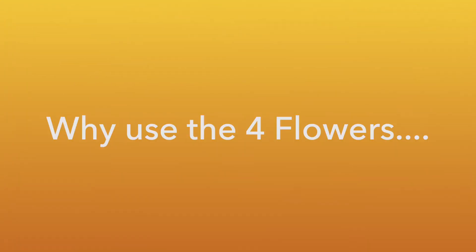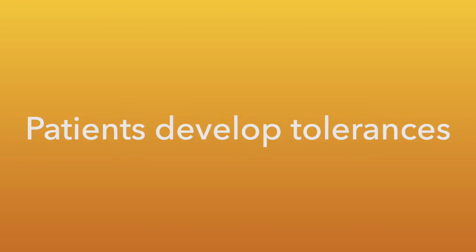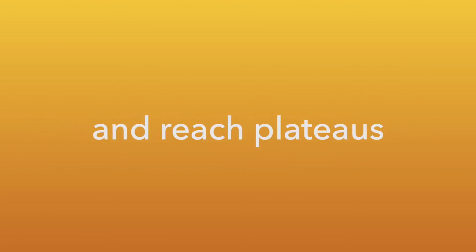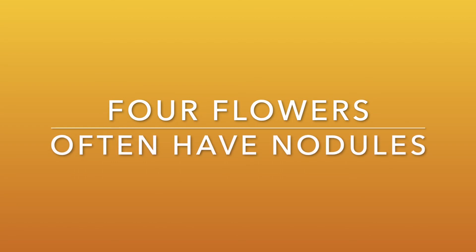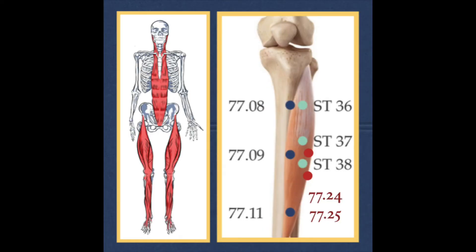The question we need to ask ourselves is: why use the four flowers instead of traditional stomach points? There are a couple of reasons. One, patients develop tolerances and they reach plateaus. Second, the four flowers often have nodules. If you palpate down the edge of the tibia and between the muscle, you'll find an empty space there, and it's very common to find areas of tightness, nodules, or trigger points in that region. That's one reason why you should be needling the four flowers — they have a strong effect on the connective tissue and on the fascia, and they're able to influence the whole stomach meridian or the superficial front line.